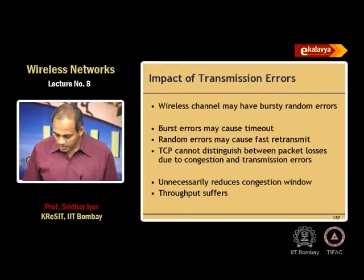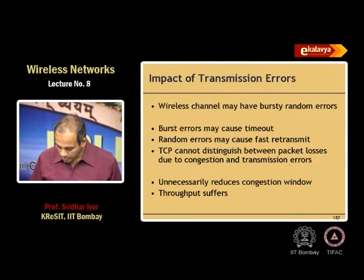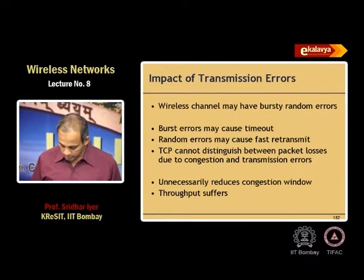Burst errors — many bits in error contiguously — can affect more than one packet at a time and cause timeout. Random errors cause one packet to be lost or corrupted, so that packet's ACK will not come, triggering fast retransmit. The key problem is TCP cannot distinguish between packet losses due to congestion and due to transmission errors, so it unnecessarily reduces the congestion window and throughput suffers.